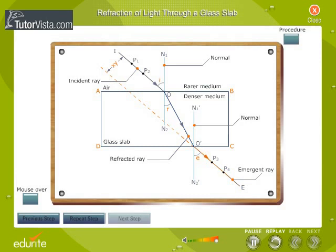O-E is parallel to the incident ray. This means that the refracted ray has been displaced from its original path by a distance xy. This displacement is referred to as lateral displacement. We also observe that angle OO dash N1 dash is equal to angle R and angle E is equal to angle I.